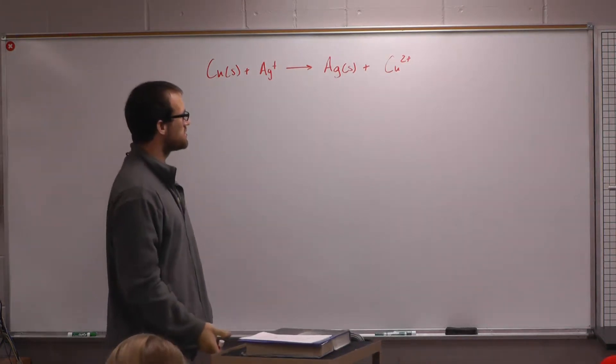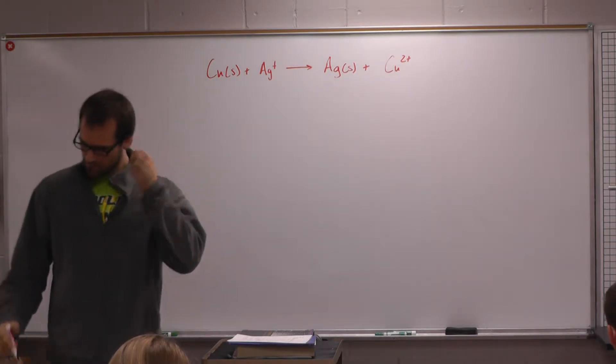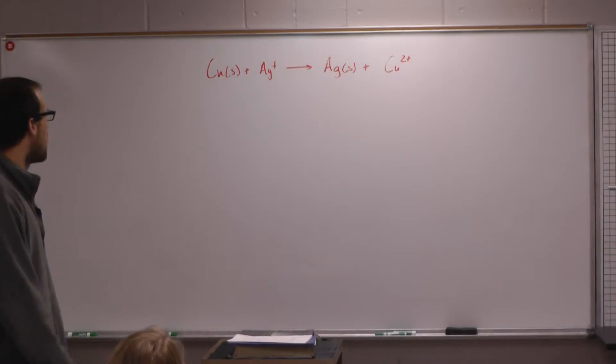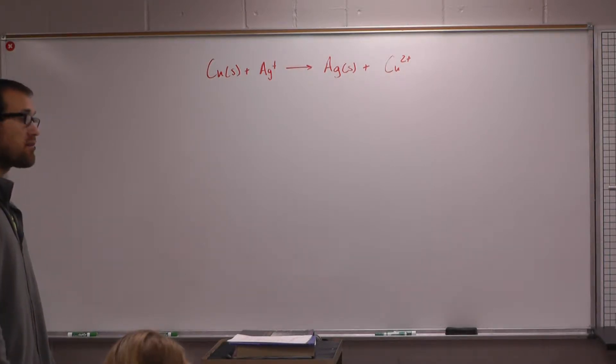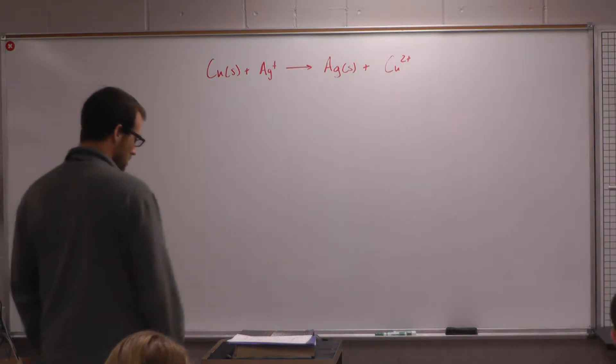Okay, in order for us to be able to balance this equation, we need to figure out what the oxidation numbers are so that we can make sure that we balance the electrons. So what I'm going to do is assign oxidation numbers, identifying just for practice the reducing agent, the oxidizing agent, that stuff like we did yesterday.